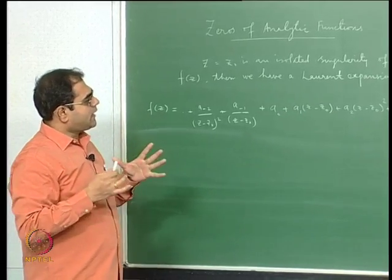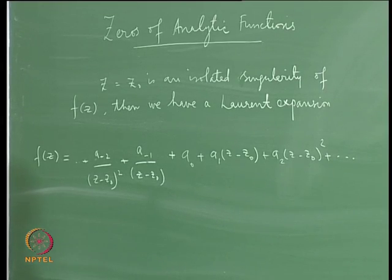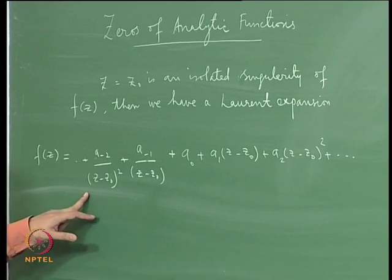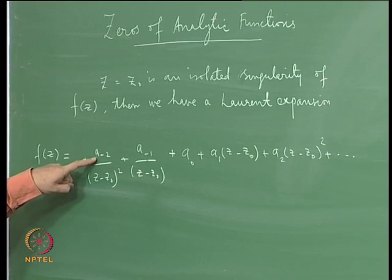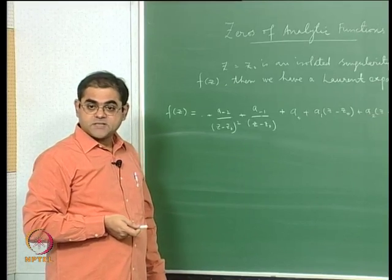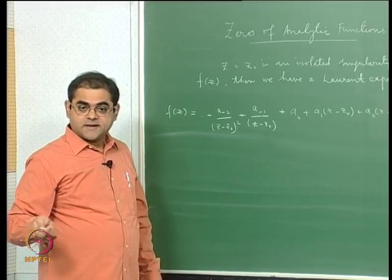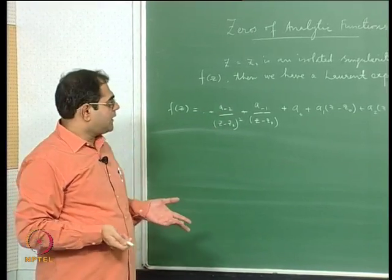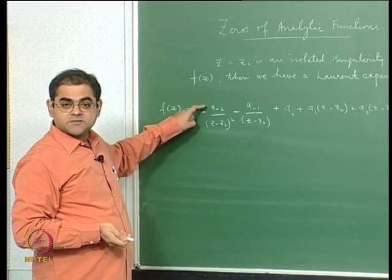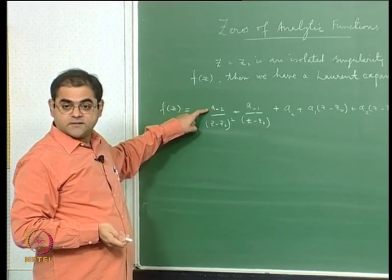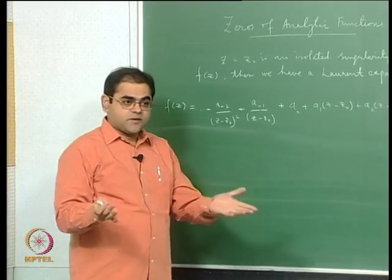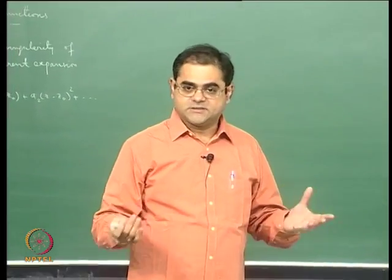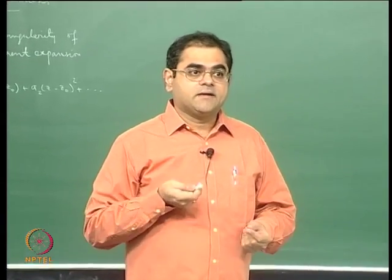Among the important singularities — poles and essential singularities — you can distinguish the type by looking at the Laurent expansion. If you get infinitely many negative powers, the singularity is an isolated essential singularity (for example e^(1/z) at z=0). If you get only finitely many negative terms, it is a pole, and the order of the pole equals the magnitude of the largest negative subscript. That is one way of distinguishing between a pole and an essential singularity. Another way is by taking limits.